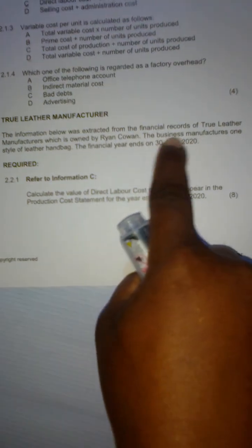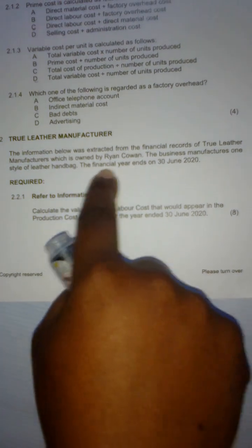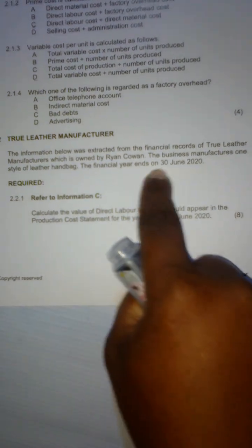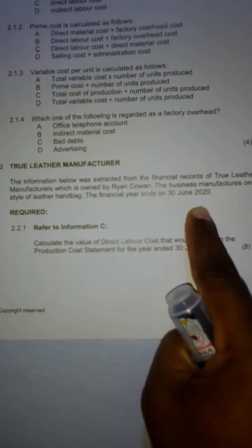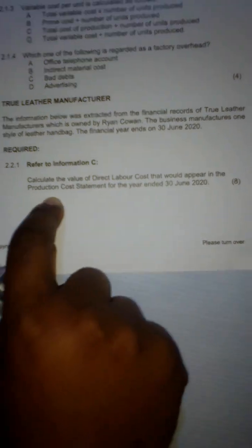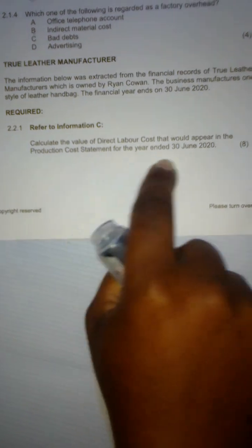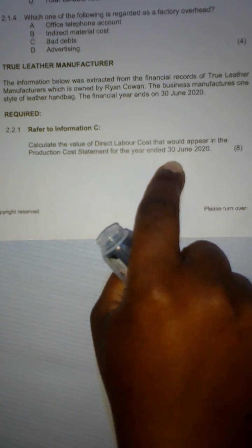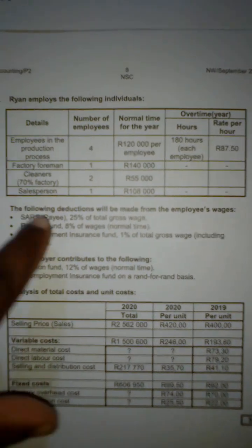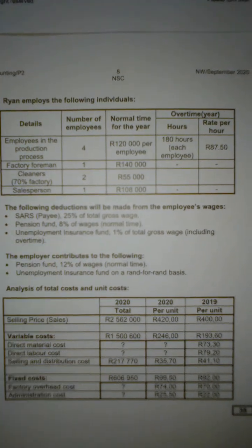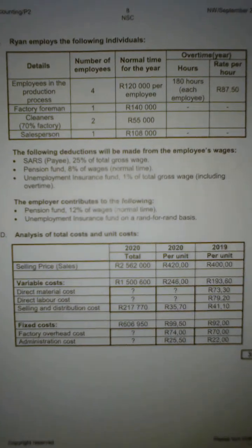Let's move on to question 2.2 — True Leather Manufacturer. The information was extracted from the financial records of True Leather Manufacturers, owned by Ryan Cohen. The business manufactures one style of leather handbag, and the financial year ends on 30 June 2020. Requirement one: calculate the value of the direct labor cost that would appear in the production cost statement for the year ended 30 June 2020.